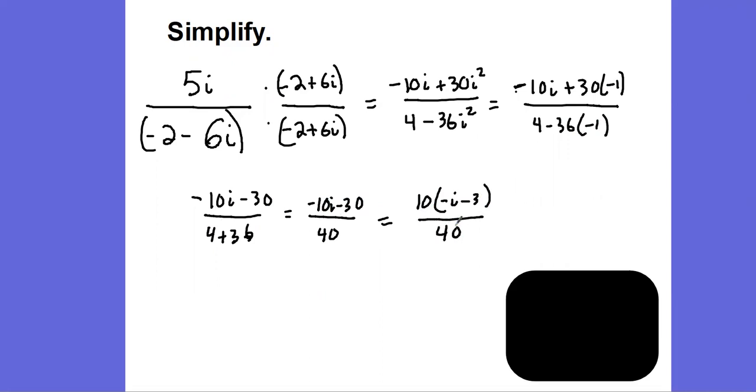It wouldn't hurt to just quickly distribute this to make sure it matches up, that we didn't make any mistakes, especially with signs with all these negatives involved. 10 times negative i is negative 10i. 10 times negative 3 is negative 30. So I think we're good.